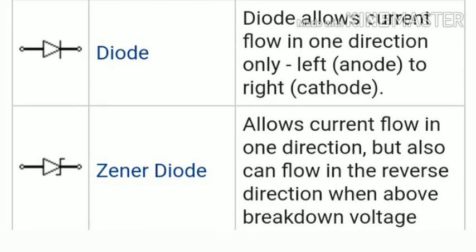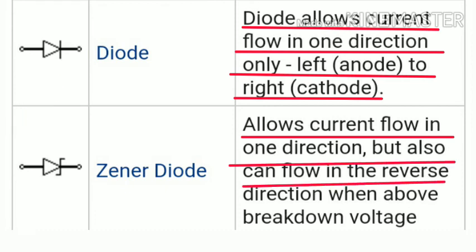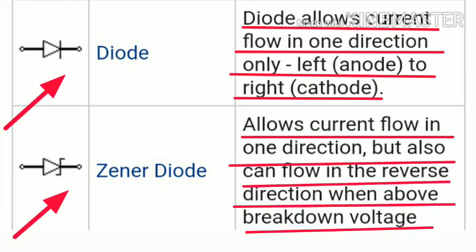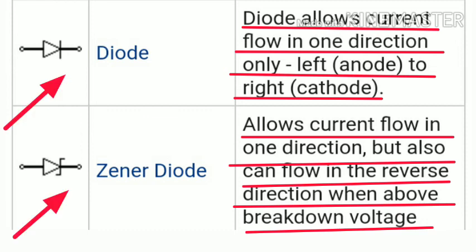The next important symbol is the diode and general diode. The diode allows current to flow in one direction — the left-hand side is the anode and the right-hand side is the cathode. The general diode is a two-terminal device that normally allows current in one direction, but can allow reverse current flow above the breakdown voltage.